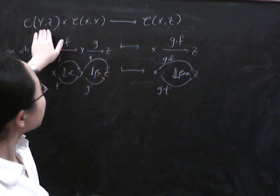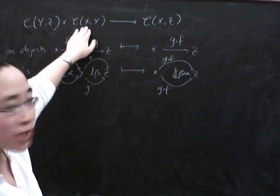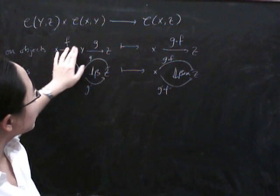Remember that in a two category, these are categories. We've got a category of morphisms from any object to any other object, and composition is then a functor.